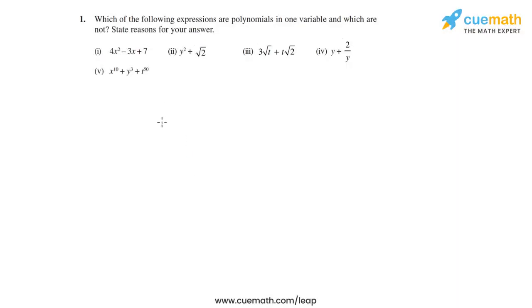Here is the first question of this exercise: which of the following expressions are polynomials in one variable, and which are not? State reasons for your answer. Remember that for an expression to be a polynomial, the powers of the variables have to be non-negative integers.